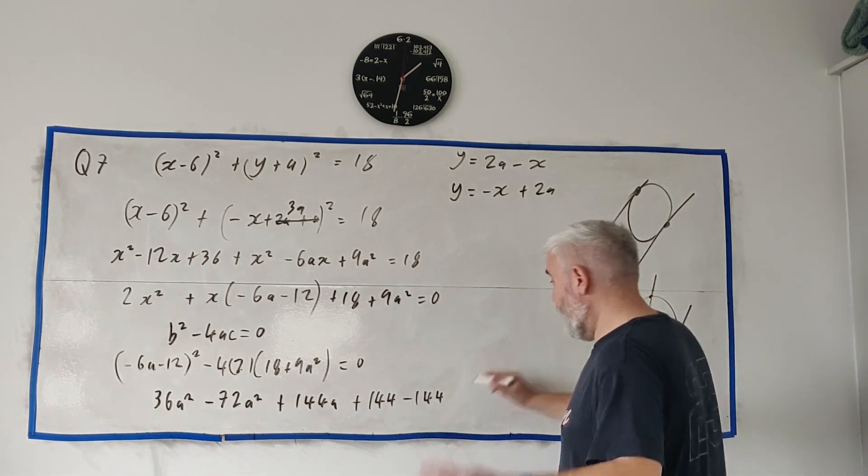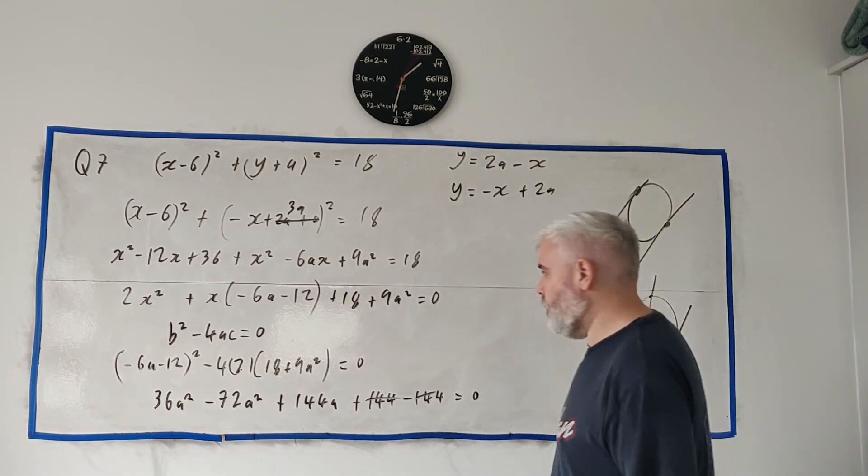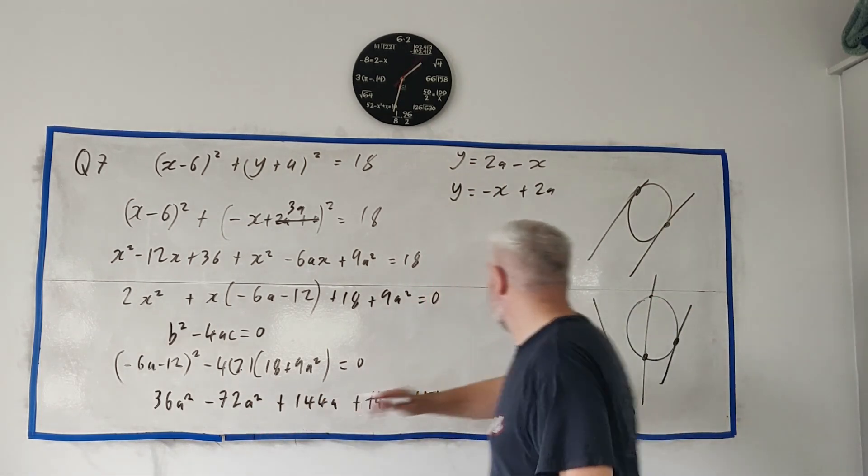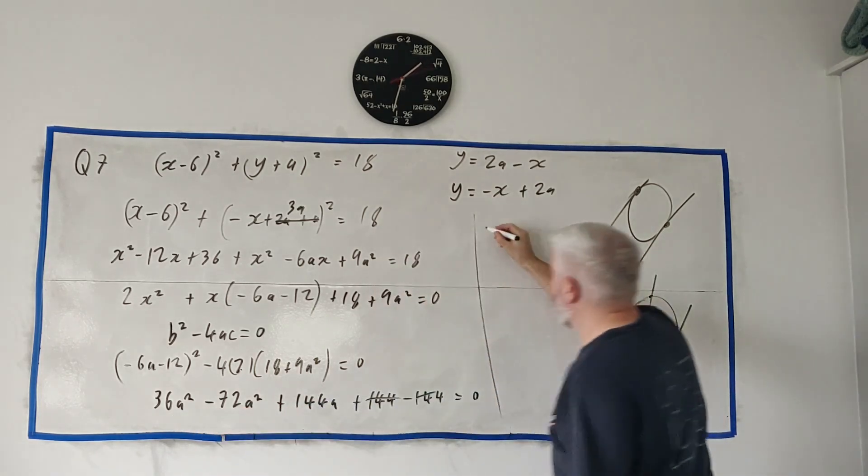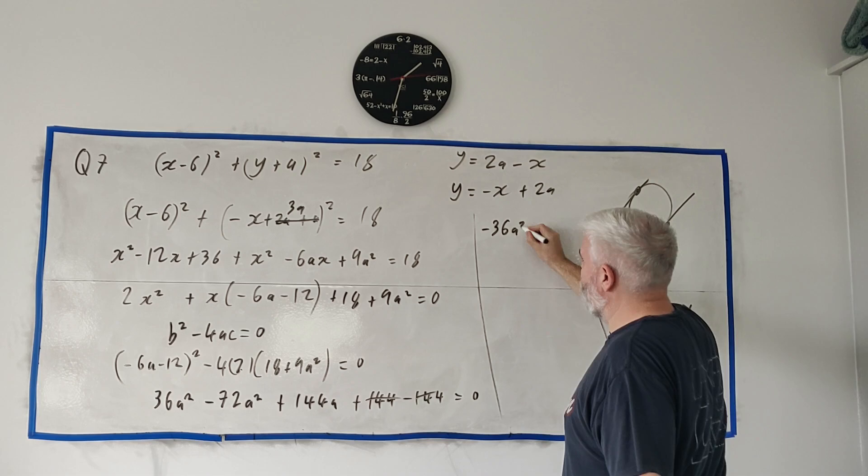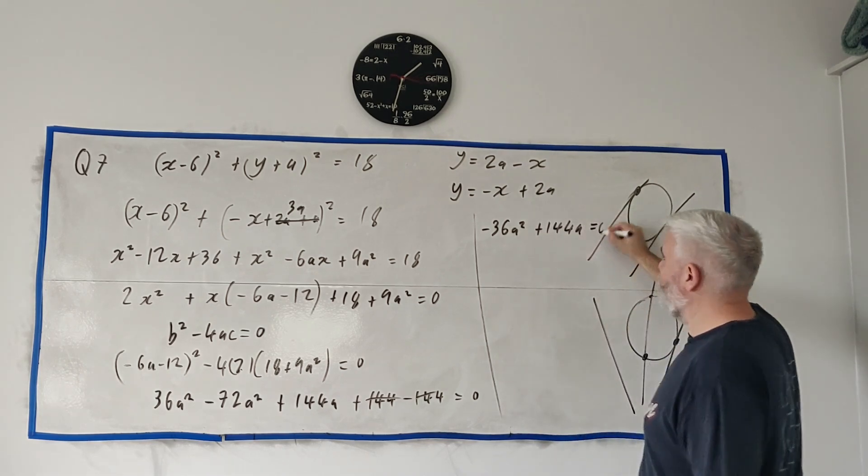And that's it, that'll equal 0. They'll cancel, that's very useful to us. And we'll be left with, let's squeeze it here a bit, this'll be minus 36 A squared plus 144 A equals 0.